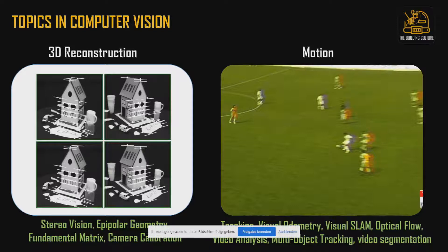Moving further, we can talk about motion — how segmentation and 3D reconstruction approaches can be applied to videos. This includes tracking, template tracking, Lucas-Kanade tracking approaches, visual odometry, visual SLAM, optical flow, video analysis, multi-object tracking, and video segmentation.